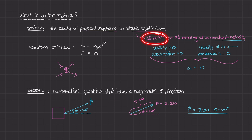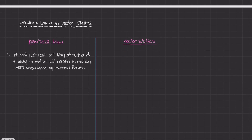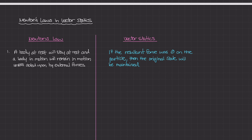If a body was at rest, its acceleration would be zero. Or if it was moving at a constant velocity, its acceleration would still be zero. So Newton's first law — when he says a body at rest will remain at rest and a body in motion will remain in motion — means that the object will not experience an acceleration unless some external force disrupts the motion or original state of that object. In other words, if the resultant force on a particle is zero, then the original state of that object will be maintained.